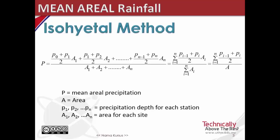This is the equation used to compute using the isohyetal method. P, or mean aerial precipitation, is equal to the precipitation depth for each station multiplied by the area, divided by the summation of the area.